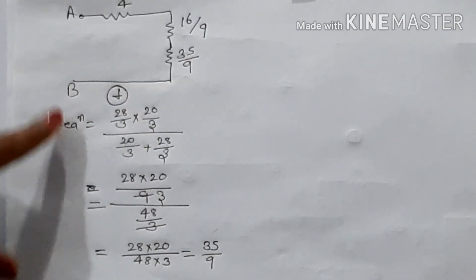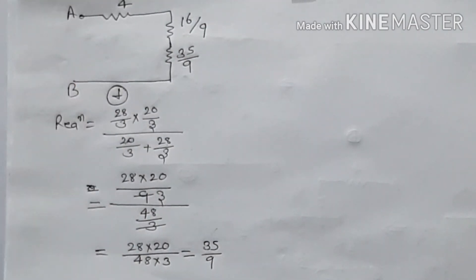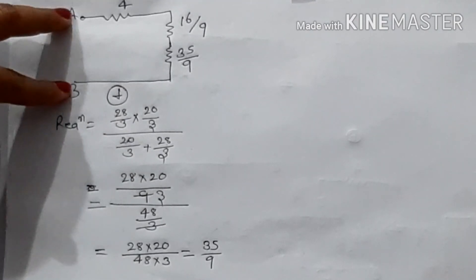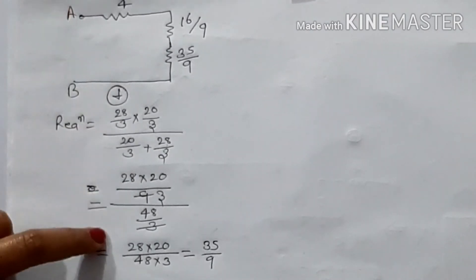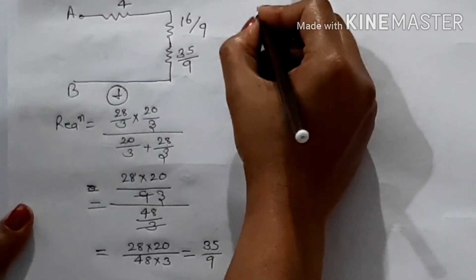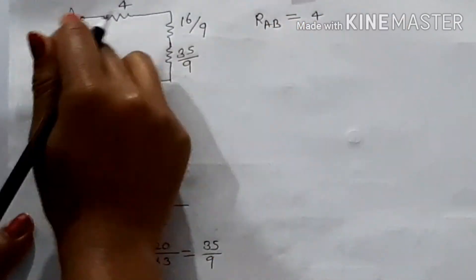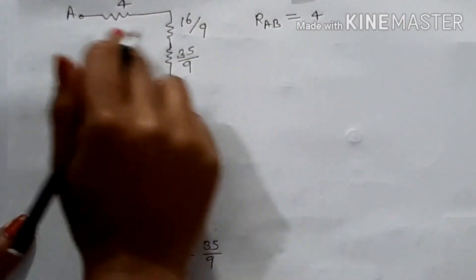Now, what is R equivalent to AB? What is R equivalent resistance? Input resistance about the point AB. Then what is RAB?